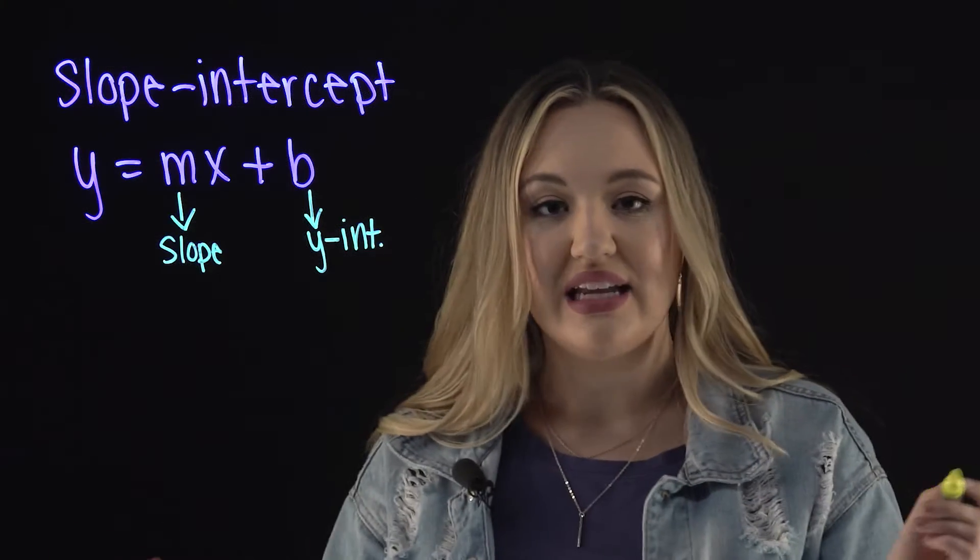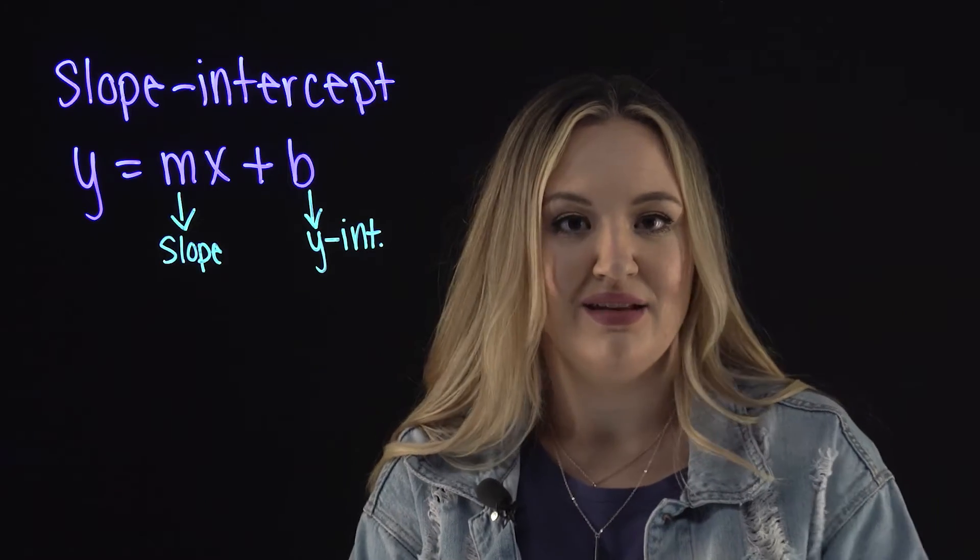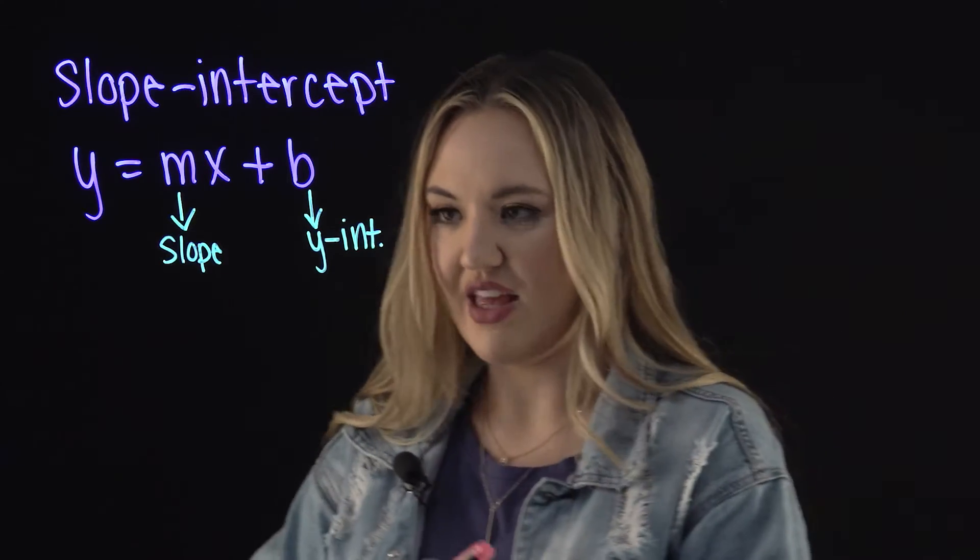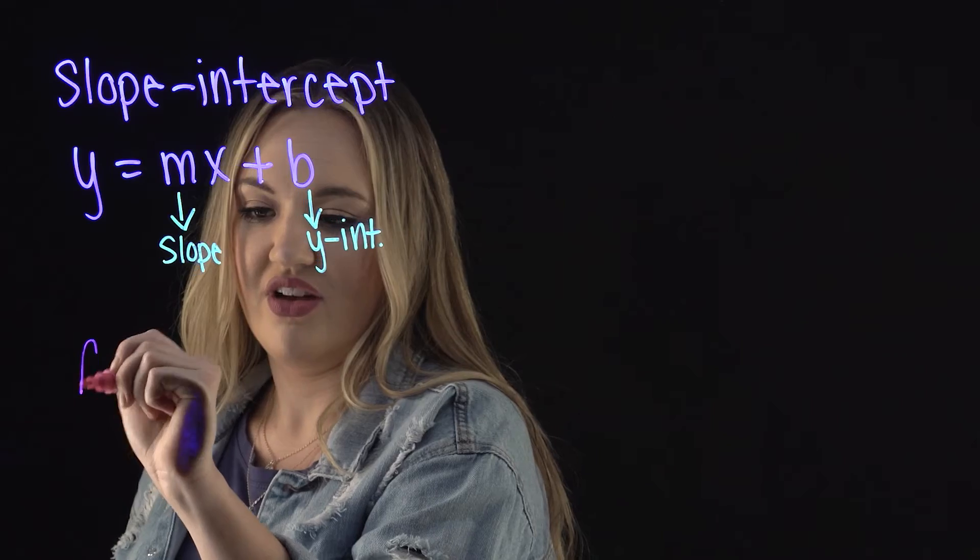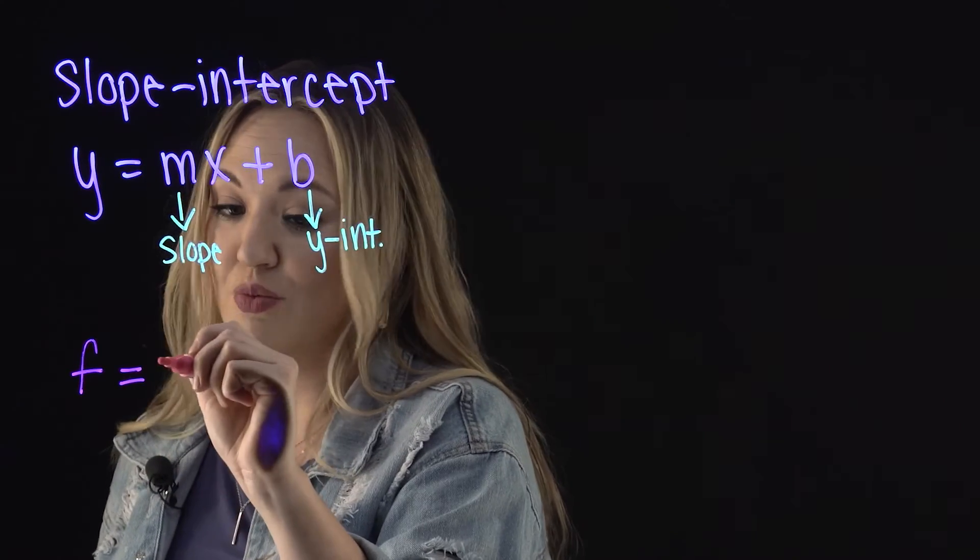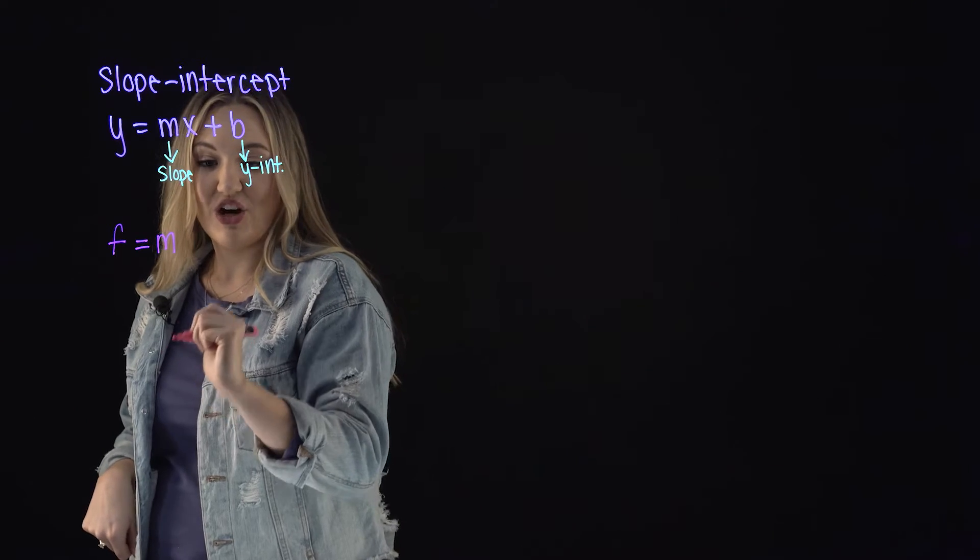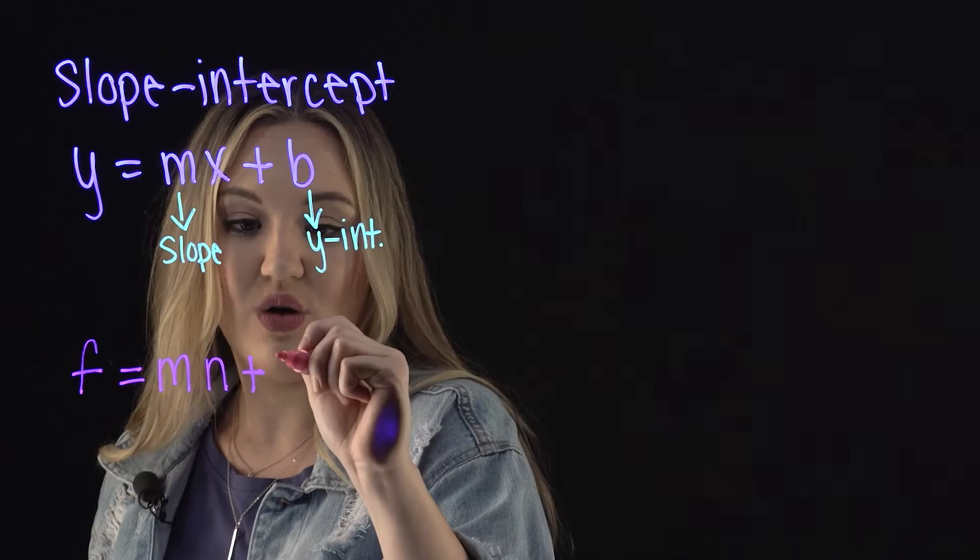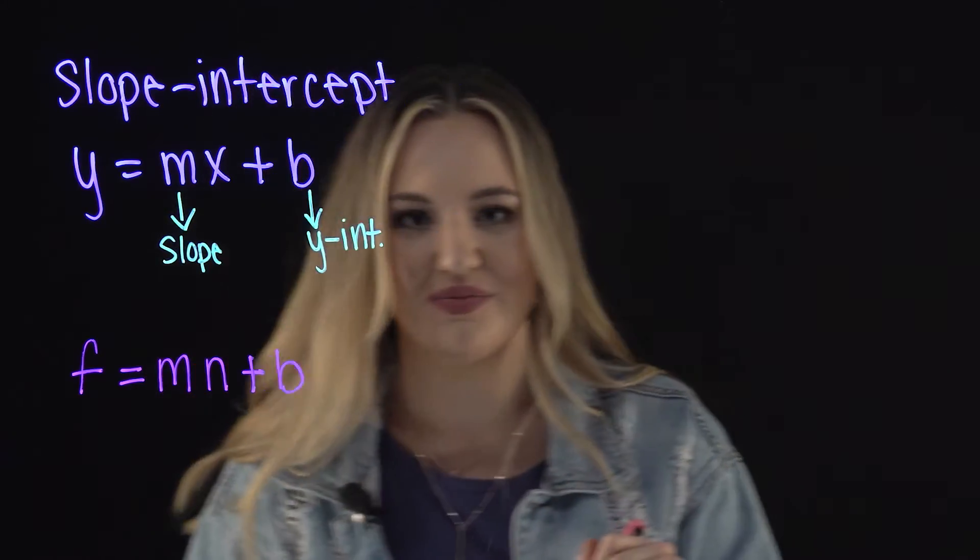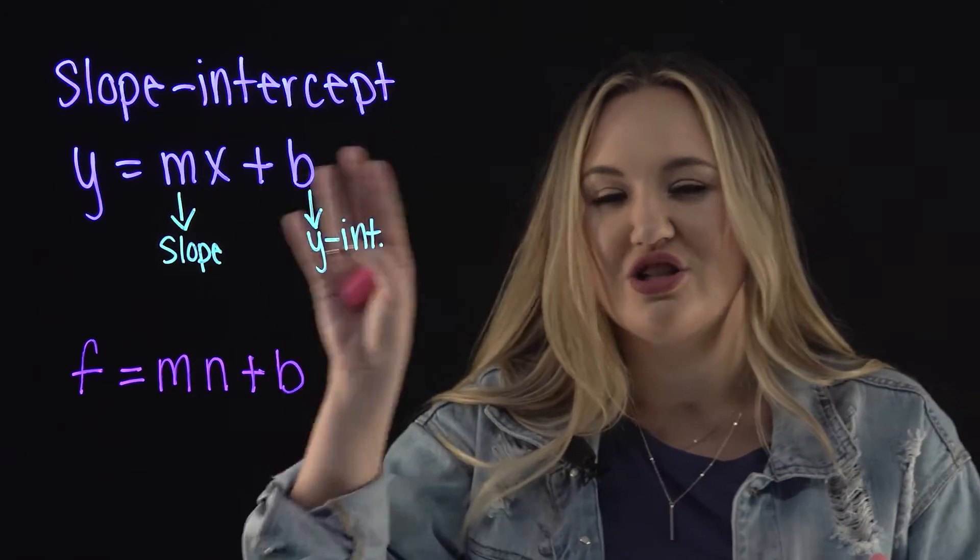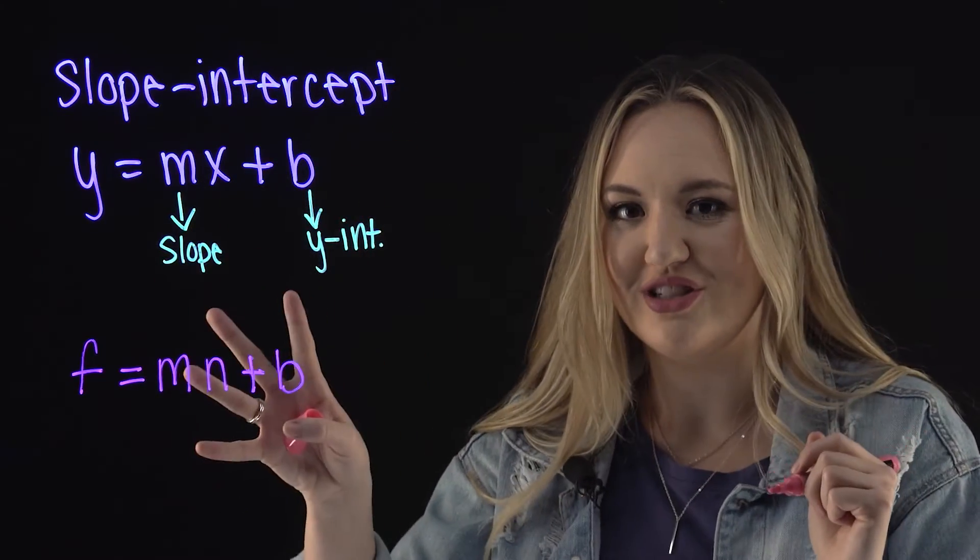So rewriting our slope intercept form with F and n doesn't change much other than your y value is F, your slope is still m, and then your x variable is just n plus our y-intercept of b, which we will figure out. Just remember our slope intercept form when you're approaching questions like this.